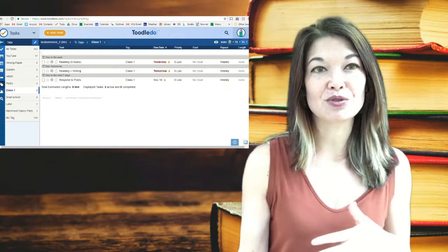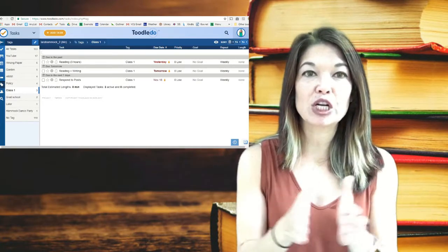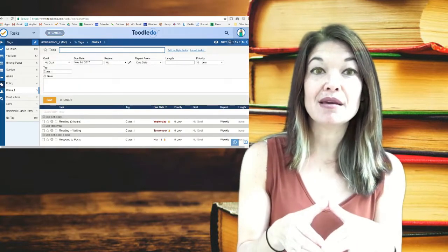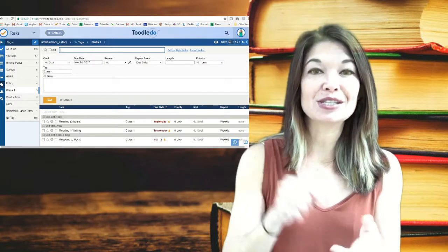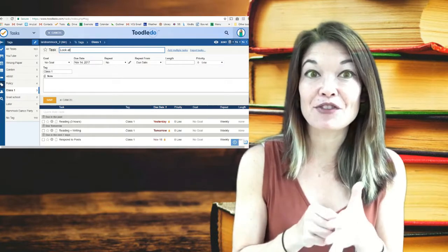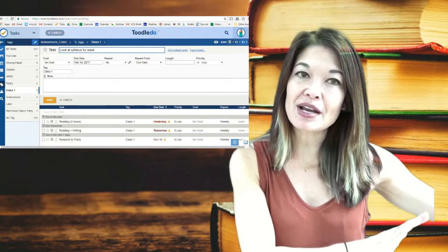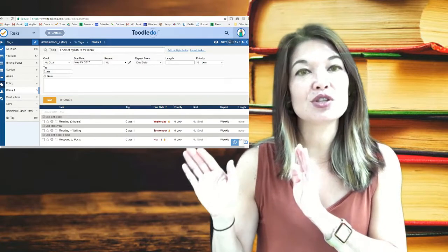Now I'm gonna put in one very important weekly repeating task for the start of each week. This task reminds me to look at the syllabus so I can determine the specific assignments that I have for that week. I leave the blocks of time on my calendar generic, but every week I do change the Toodledo tasks so that they show specifically what I need to do.